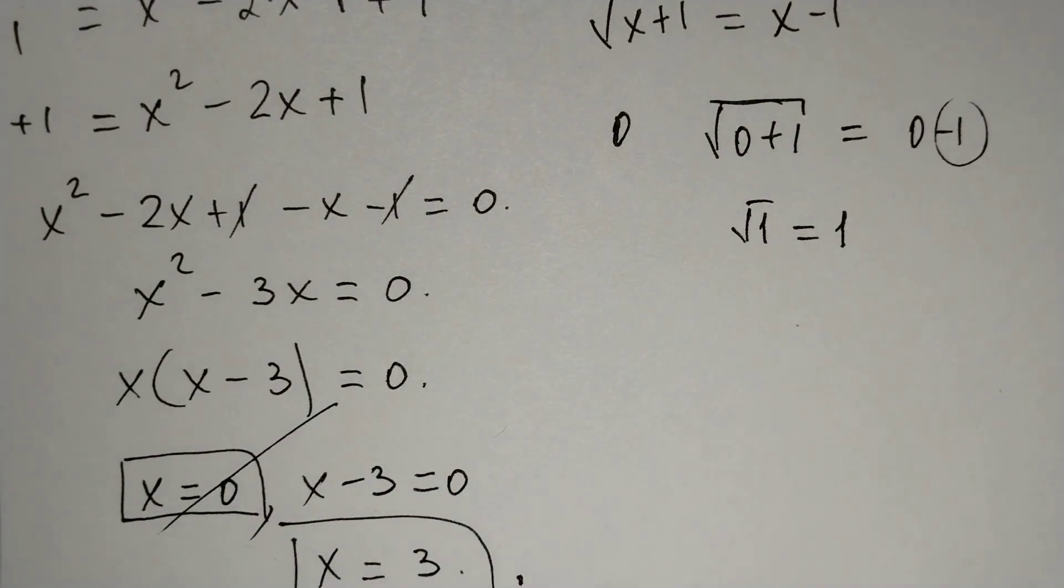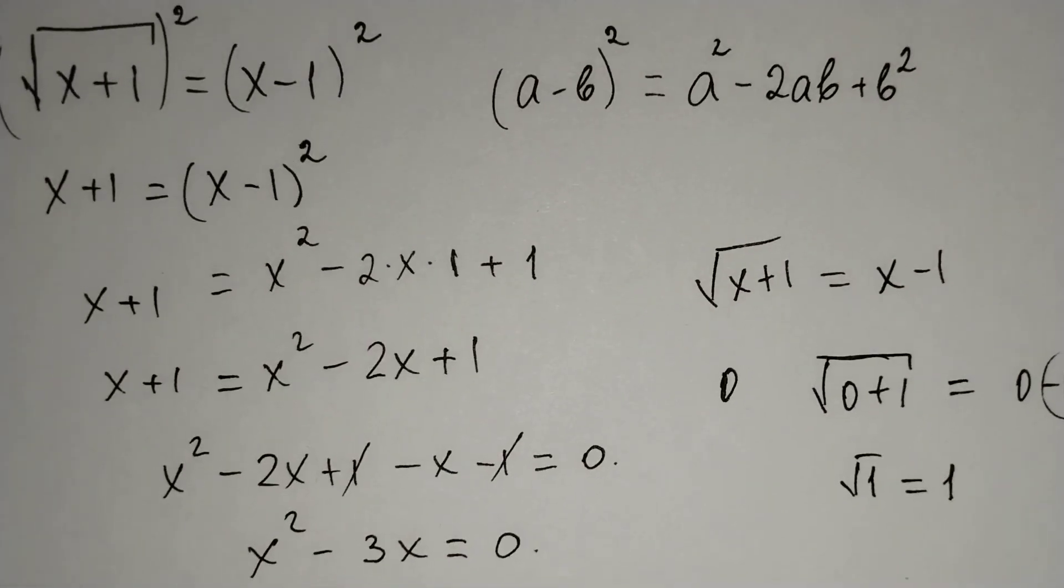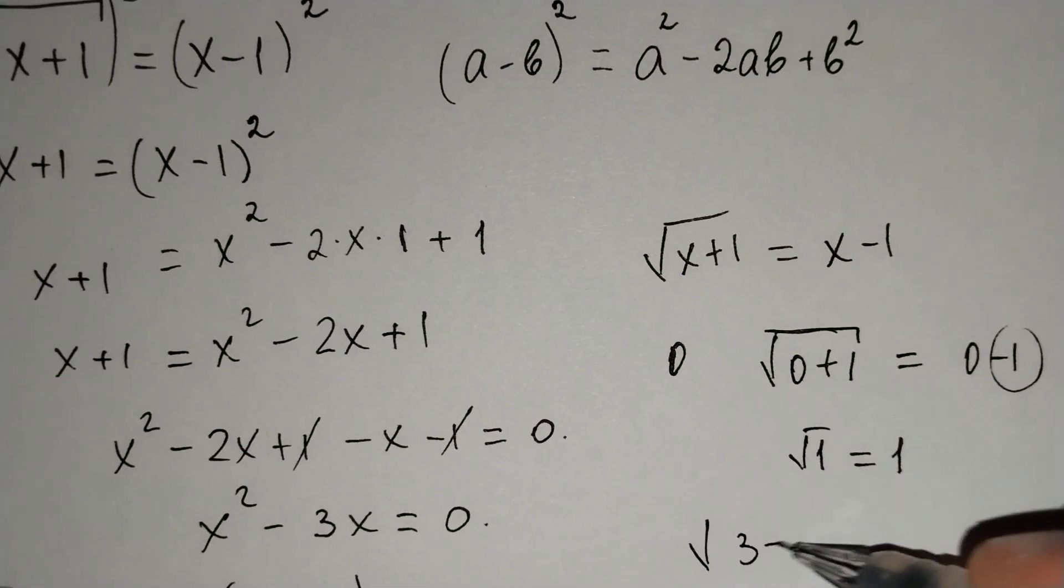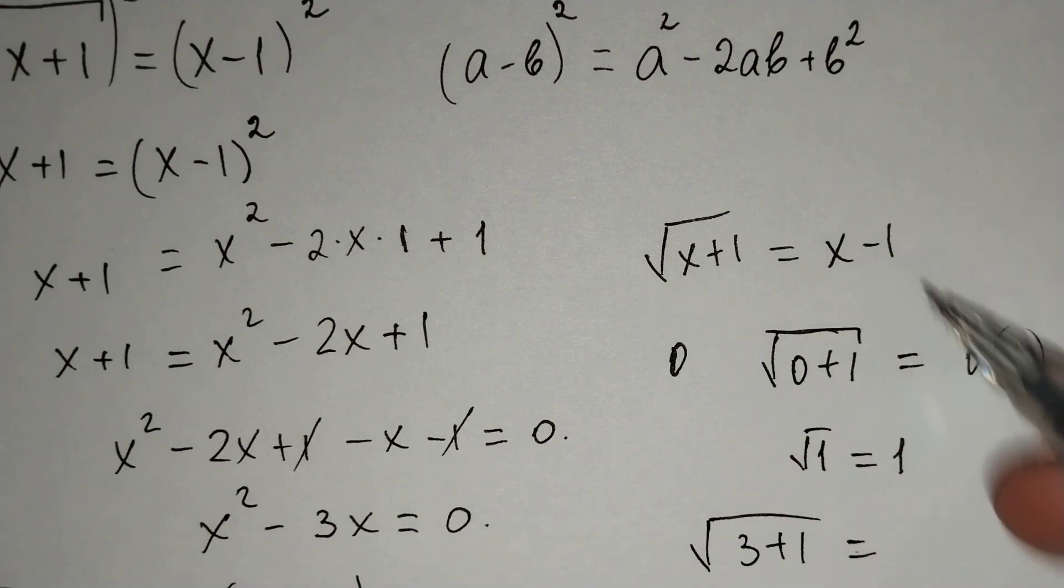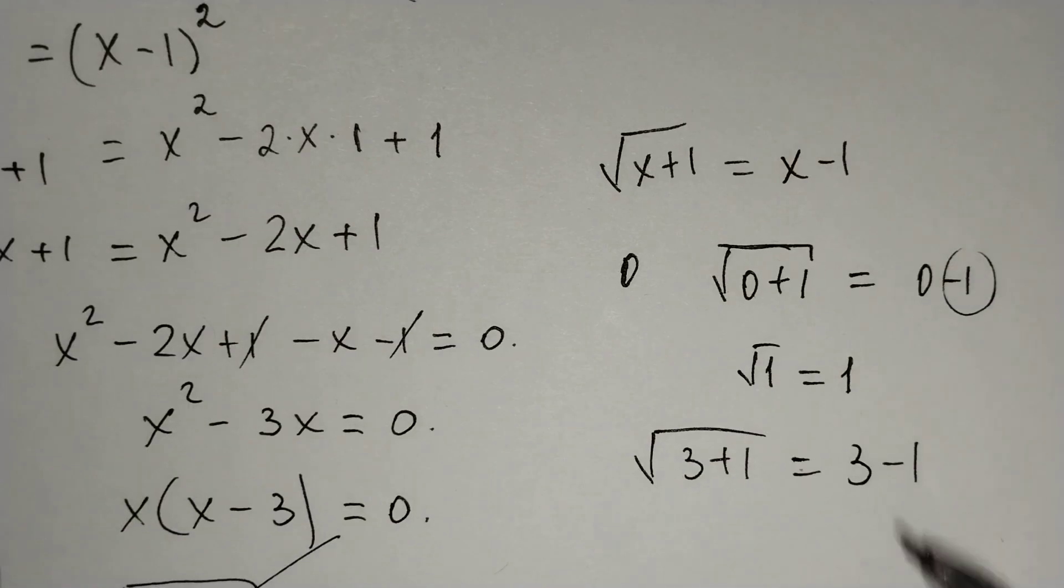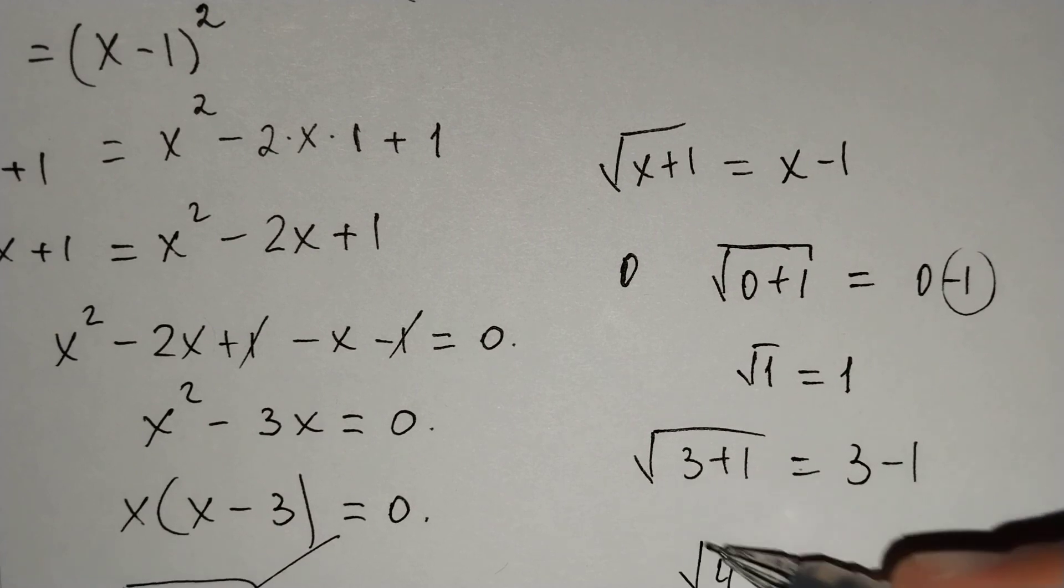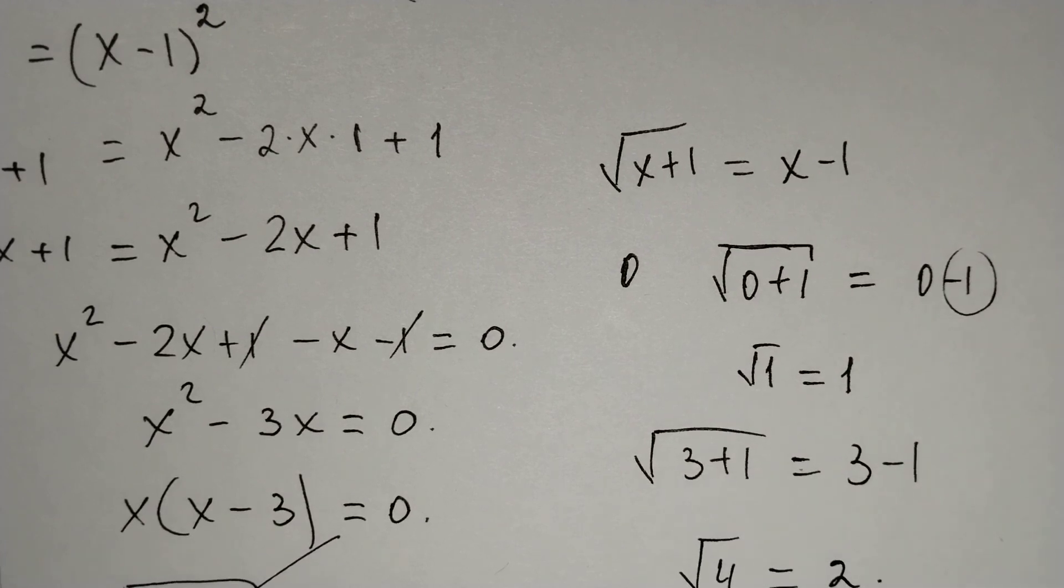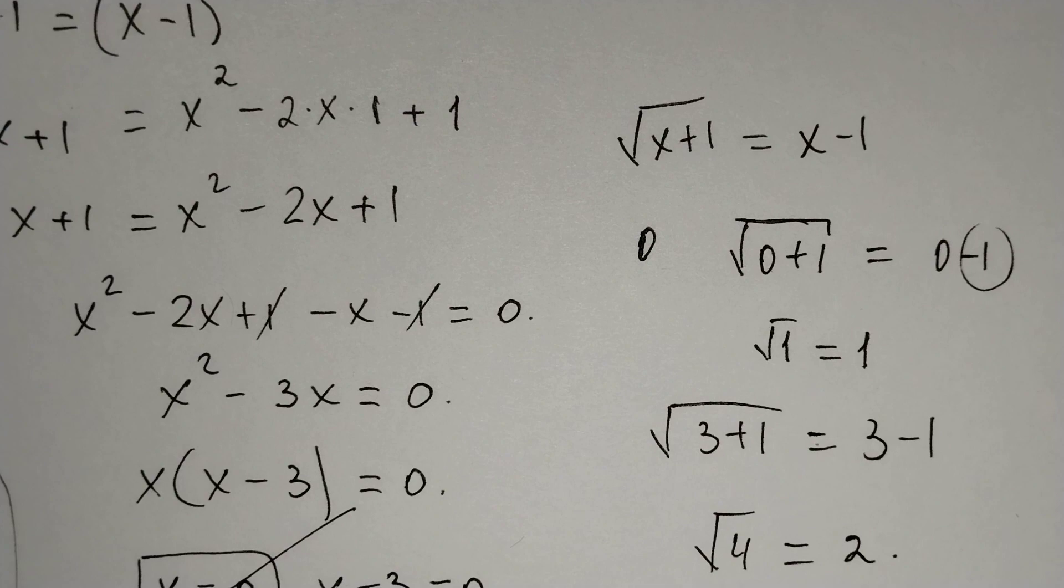And x equals 3. Is it true or no? Square root of 3 plus 1 should equal 3 minus 1. This is true because square root of 4 equals 2. Square root of 4 equals 2.